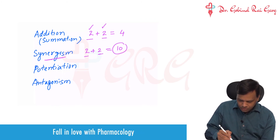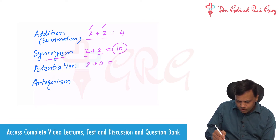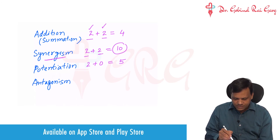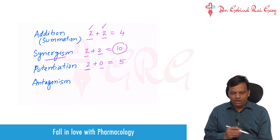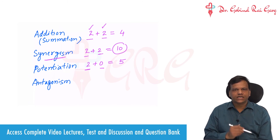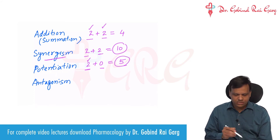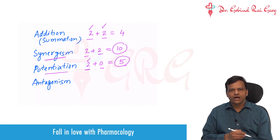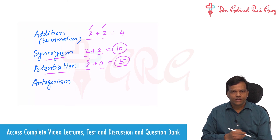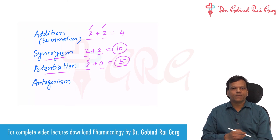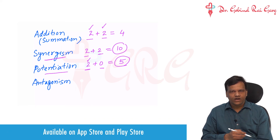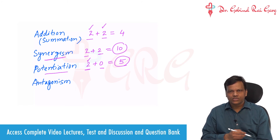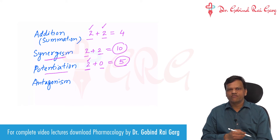Potentiation means 2 plus 0 equals 5. Out of the two drugs, one is active and one is inactive, but when we add the inactive drug to the active drug, the effect of the active drug increases. An example is levodopa plus carbidopa in Parkinsonism. When we give only levodopa, it can treat Parkinsonism but is not very effective. But when we add carbidopa, which is itself inactive, more levodopa can enter the brain and its efficacy increases. That is potentiation.